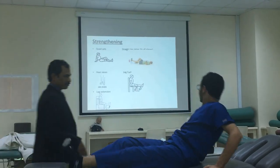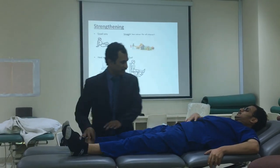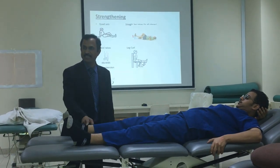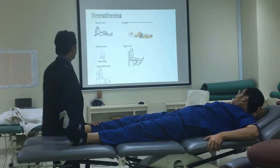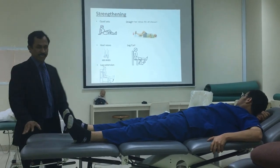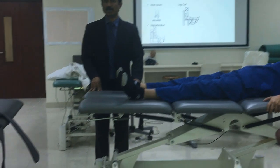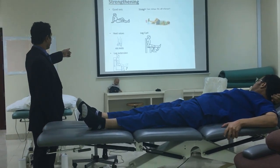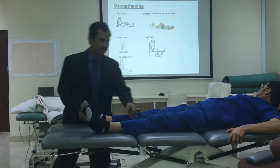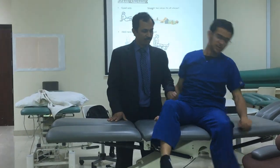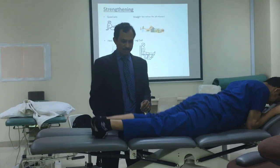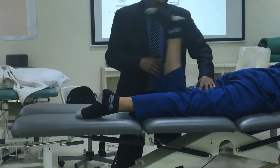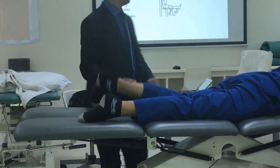Number three: heel raises. Number four: leg curl - I told you already. Leg curl like this, or in prone position. In prone position, tie right here and do flexion - one, two, three, like this.